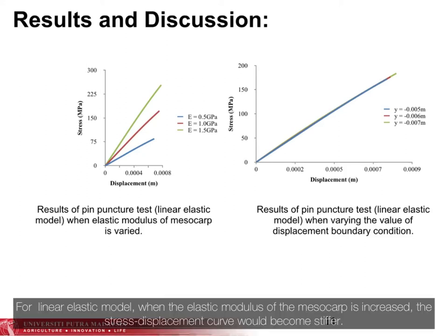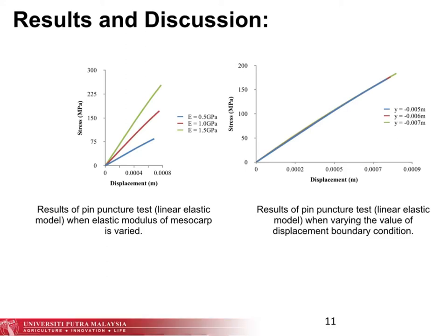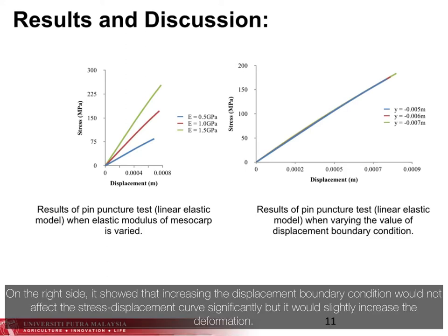For the linear elastic model, when the elastic modulus of the mesocarp is increased, the stress-displacement curve will become stiffer. It shows that increasing the displacement boundary condition of the model would not affect the stress-displacement curve significantly, but it will slightly increase the deformation.